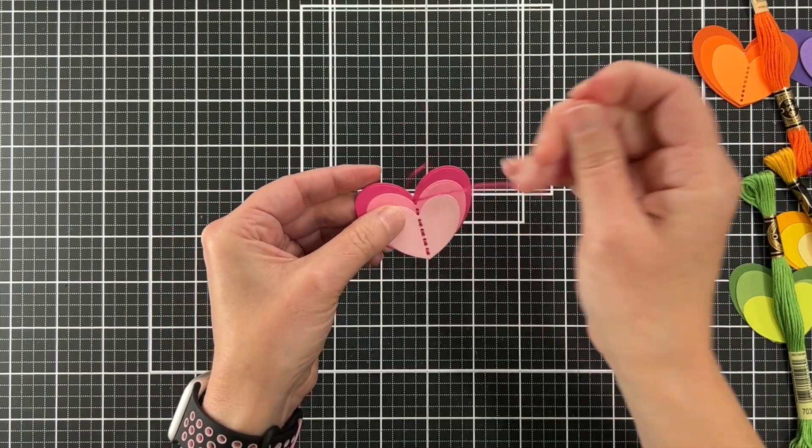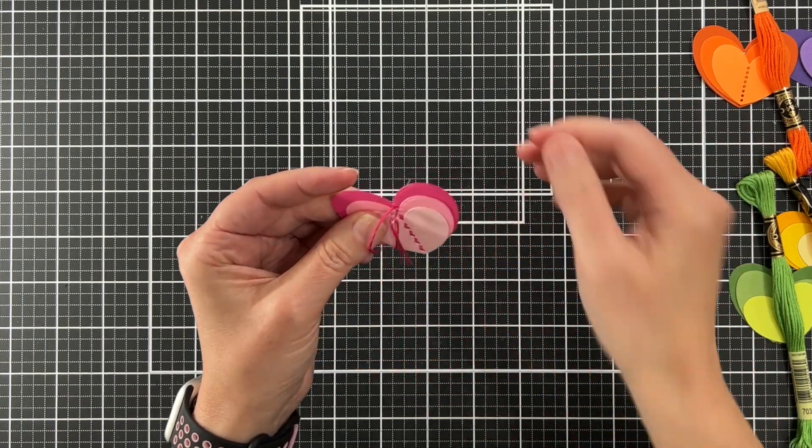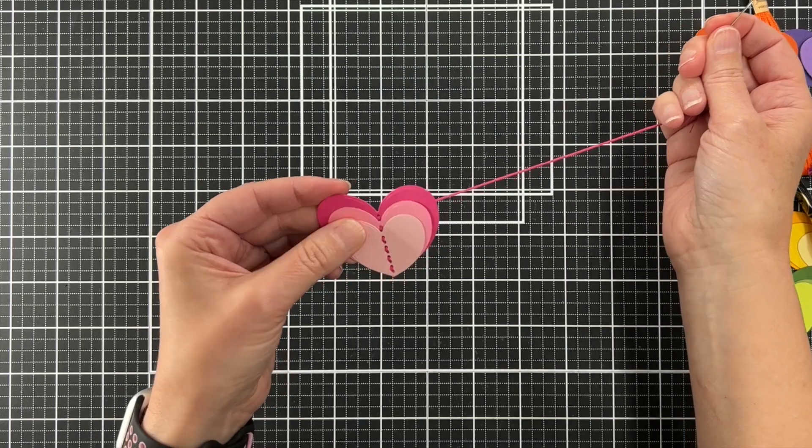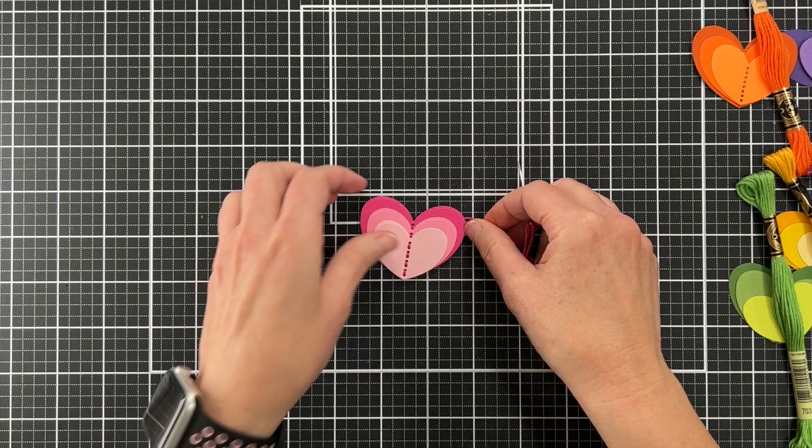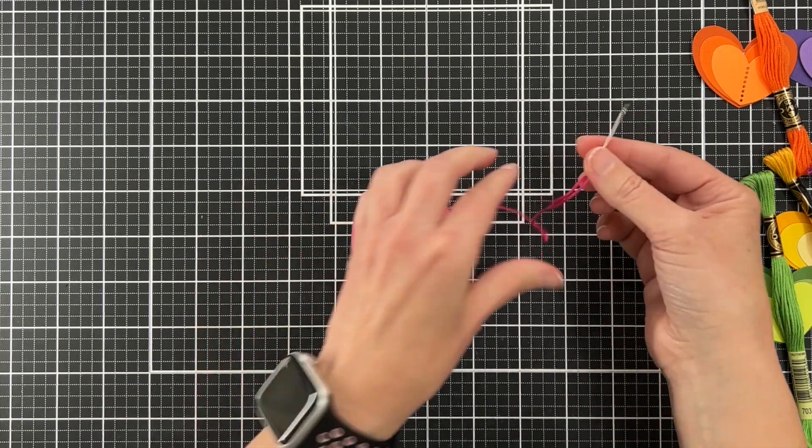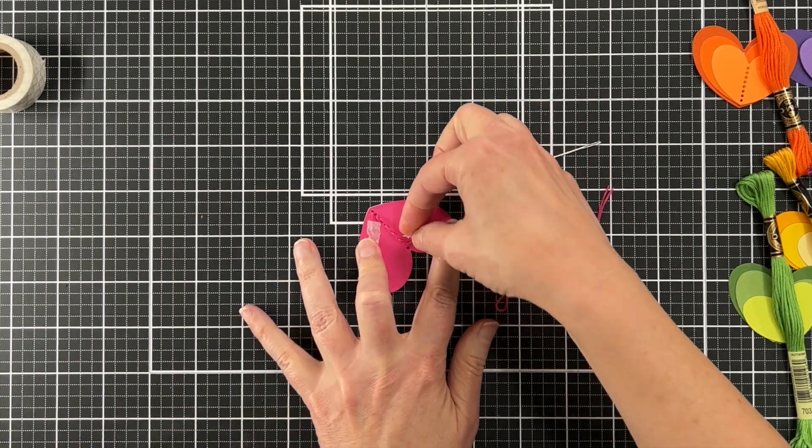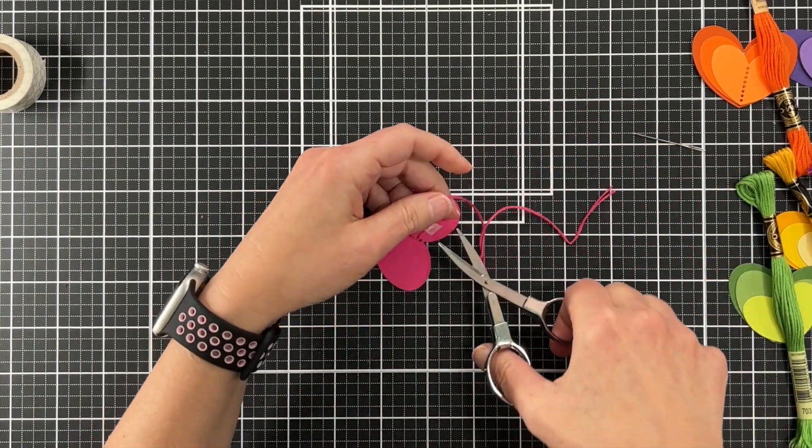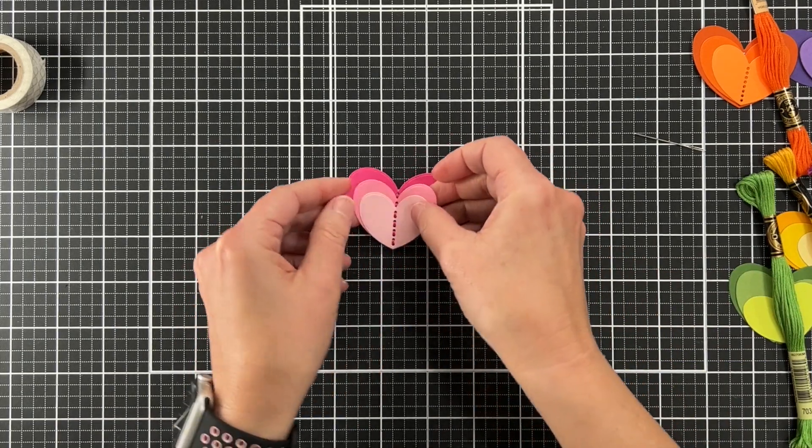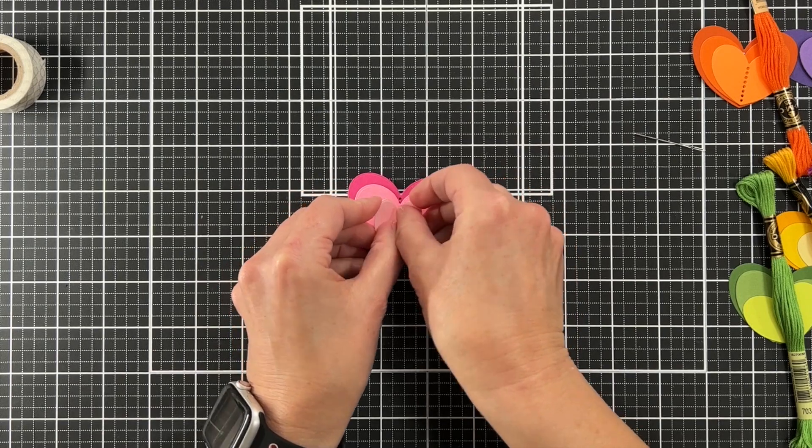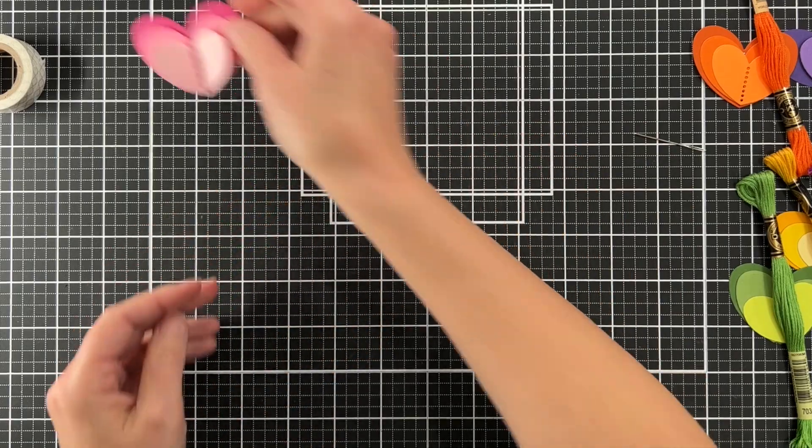I am almost done with my heart. See, that was really fast. Because they're just connected in the middle by the floss, it helps create dimension on these hearts, which I think is really cool. Here I'm going to just attach that other loose piece with some more washi. I could have left both pieces long and tied them together at the back, but I personally use washi.